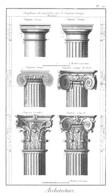This page is a glossary of architecture. Abacus: a flat slab forming the uppermost member or division of the capital of a column.